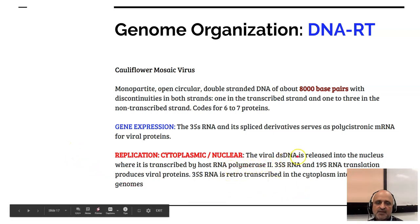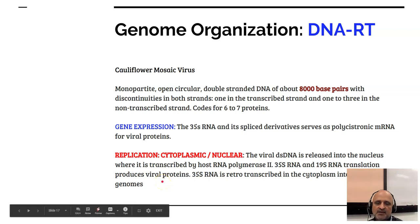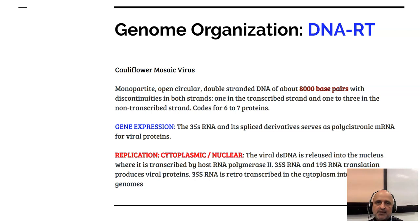Viral double-stranded DNA is released into the nucleus where it is transcribed by the host RNA polymerase 2. 35S RNA and 19S RNA translation produces viral proteins, and 35S RNA is retro-transcribed in the cytoplasm into new double-stranded DNA genomes. An interesting point about cauliflower mosaic virus is that the nucleic acid is infectious by itself without the viral coat protein. This virus is transmitted by aphids and has specific proteins which bind to the aphid stylet.